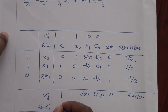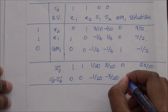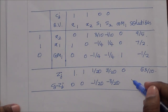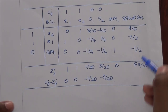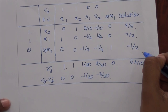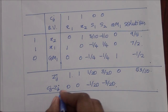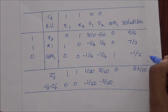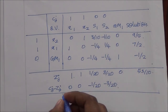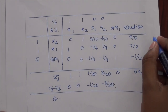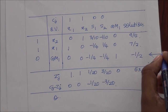In dual simplex method, a solution is feasible when all cj minus zj values are less than or equal to 0. We may continue iterating if cj minus zj is less than 0 and any solution value is negative. The solution is infeasible only when cj minus zj becomes positive. Here we have negative values in cj minus zj and a negative value for gm1 in our solution, so we may continue iterating. To choose the pivot row, we select the most negative value in the solution, which is minus 1 by 2.